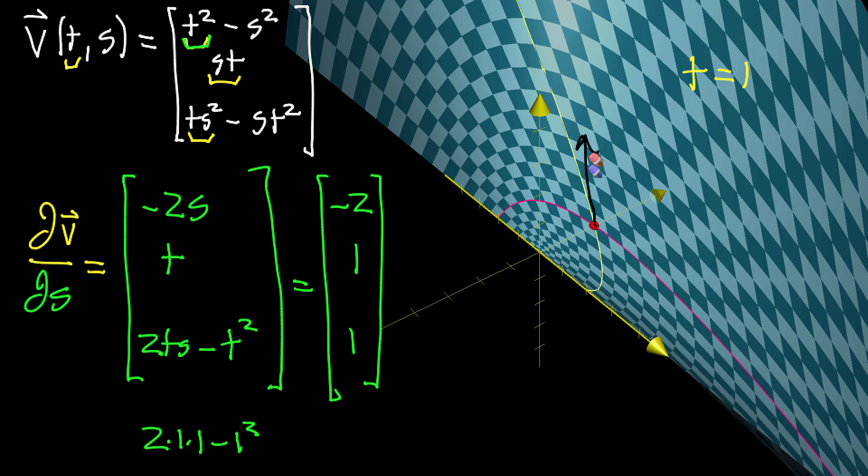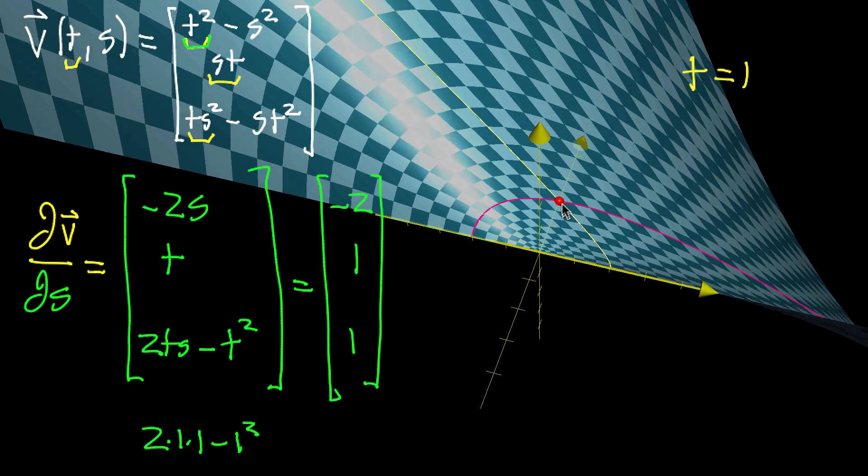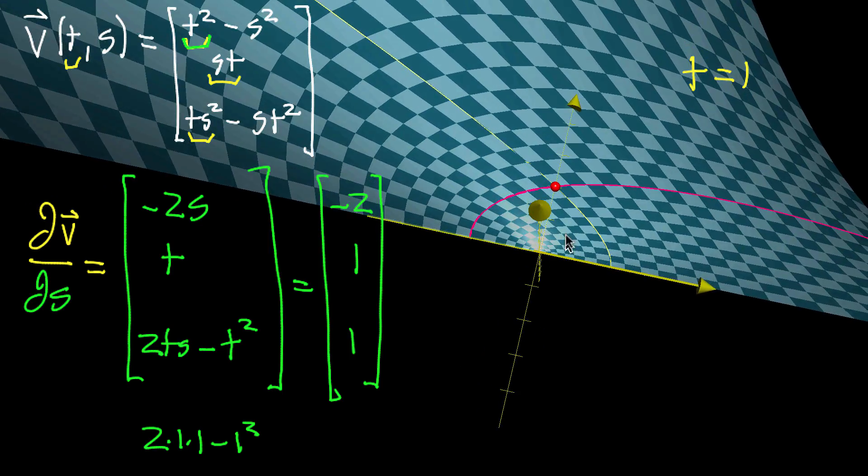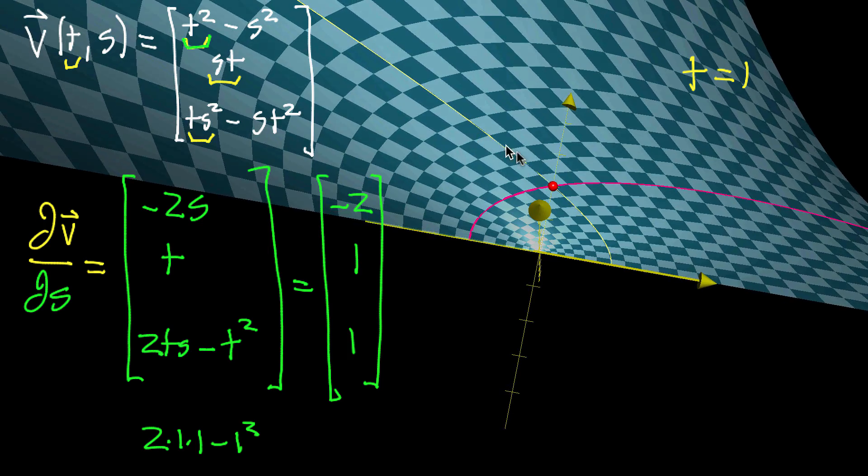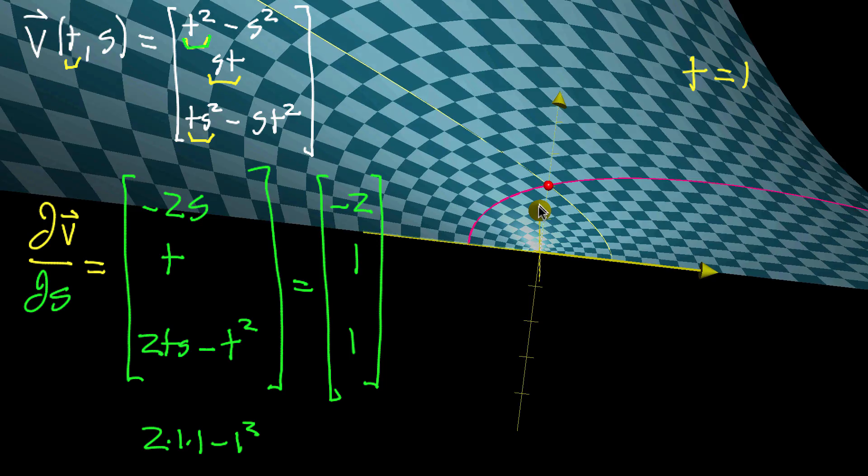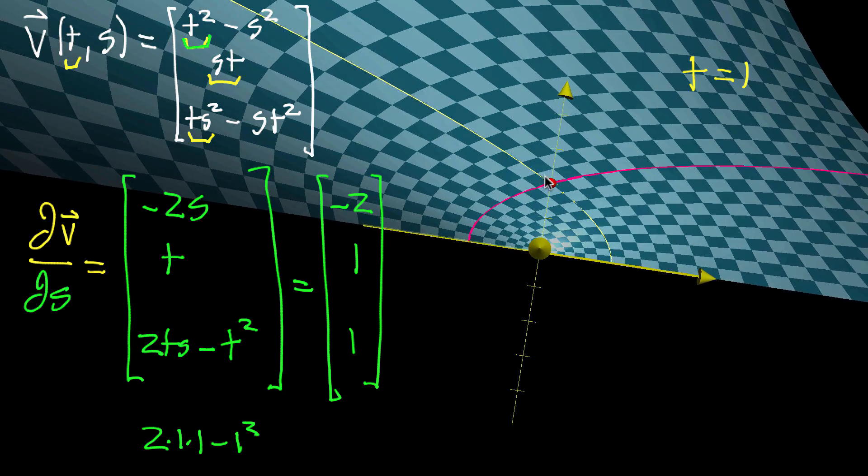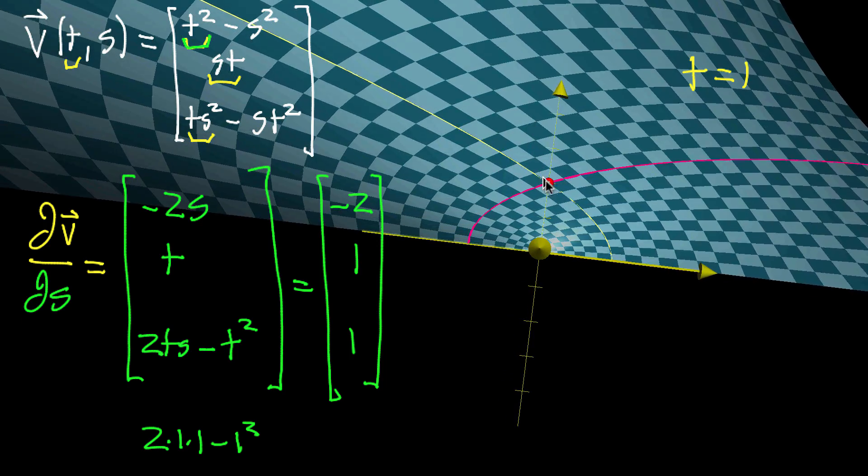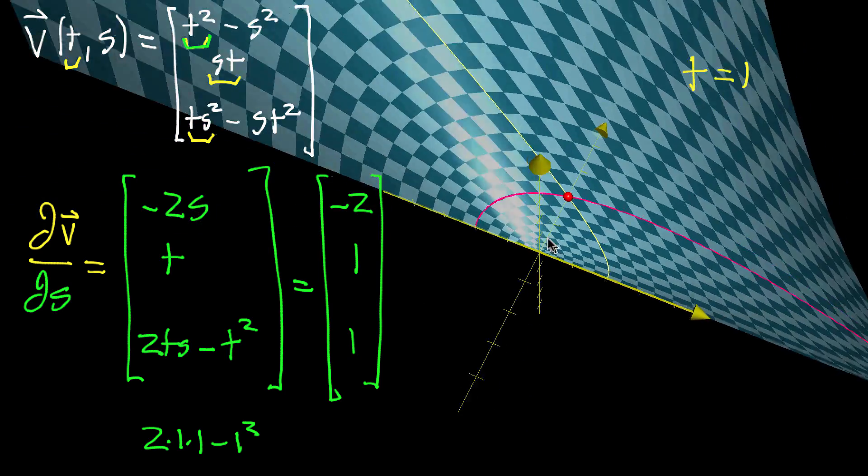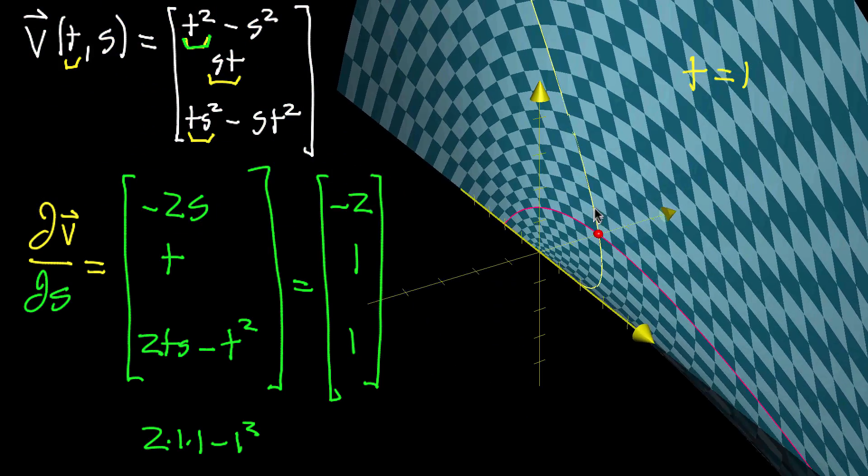What we would expect for the tangent vector is the X component should be negative, and the Y and Z components should each be positive. If we look at the movement along the curve, that lines up. As you zip along this curve, you're moving to the left, so the X component should be negative, but you're moving upwards as far as Y is concerned.